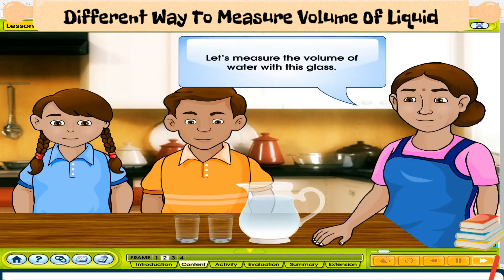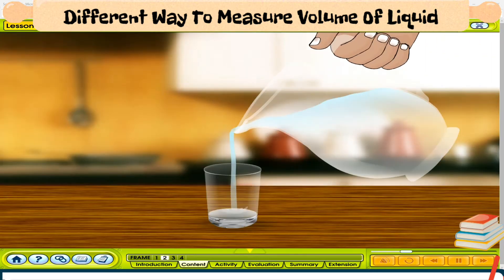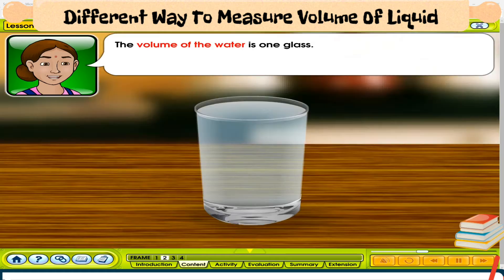Let's measure the volume of water with this glass. I'll pour water into the glass until it's full. Look, I have a glass of water. The volume of the water is one glass.